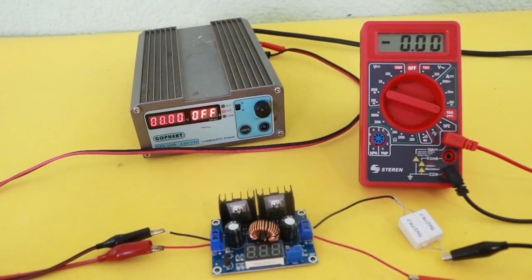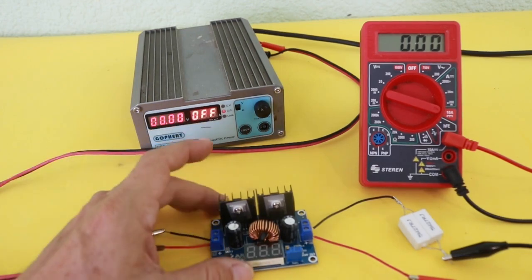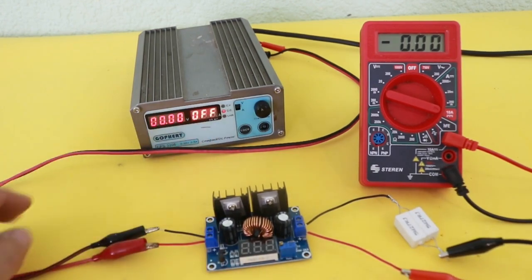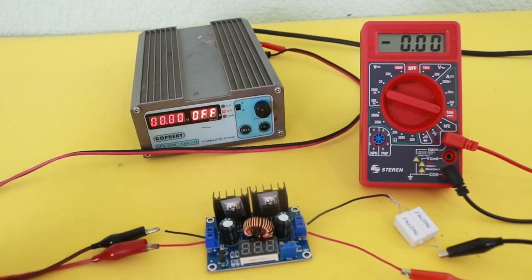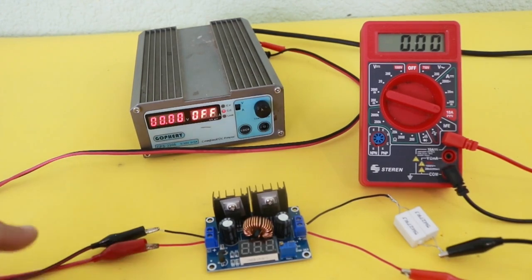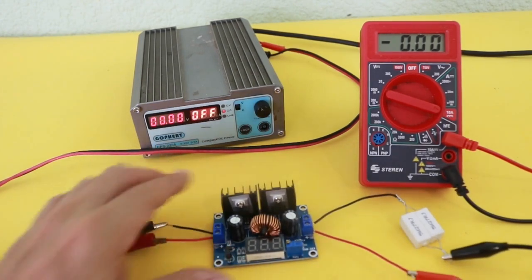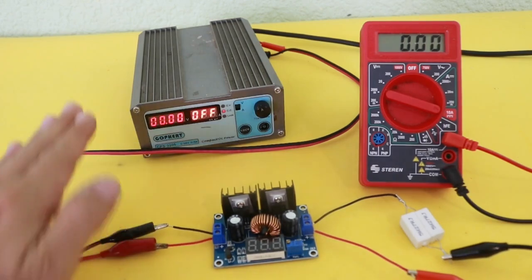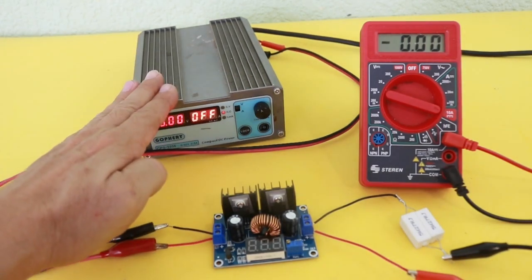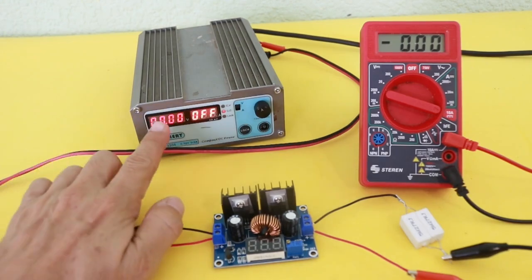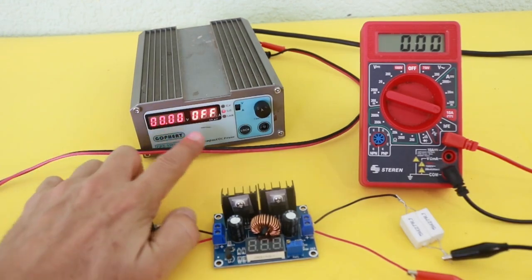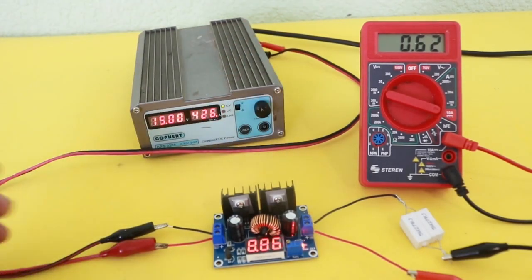Okay, so let's check the efficiency of the module, which can be obtained by the output power divided by the input power. Remember that power is voltage times current. So I have here the module, it is connected to my power supply, so we know the input voltage from the power supply and the input current also.